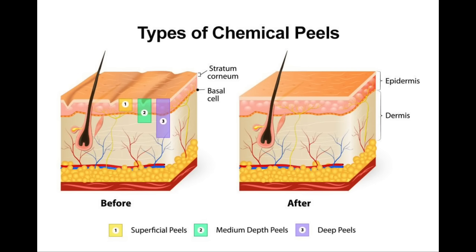Depending on the depth of the peel, that is going to determine the treatment results. Superficial chemical peels are used to treat things like blackheads and whiteheads. They can improve the look of sunspots, also known as solar lentigines, and smooth out skin texture. Whereas medium and deep peels are used to target the deeper layers of the skin to improve the look of wrinkles and certain types of scars. The deeper the peel, the longer the healing time and the greater the risk of adverse side effects like hyperpigmentation and scarring.